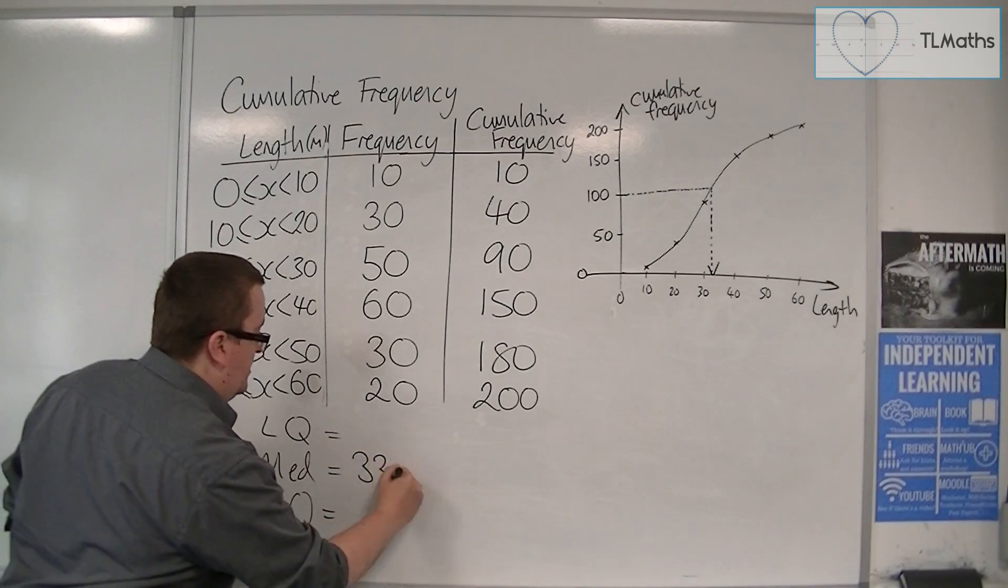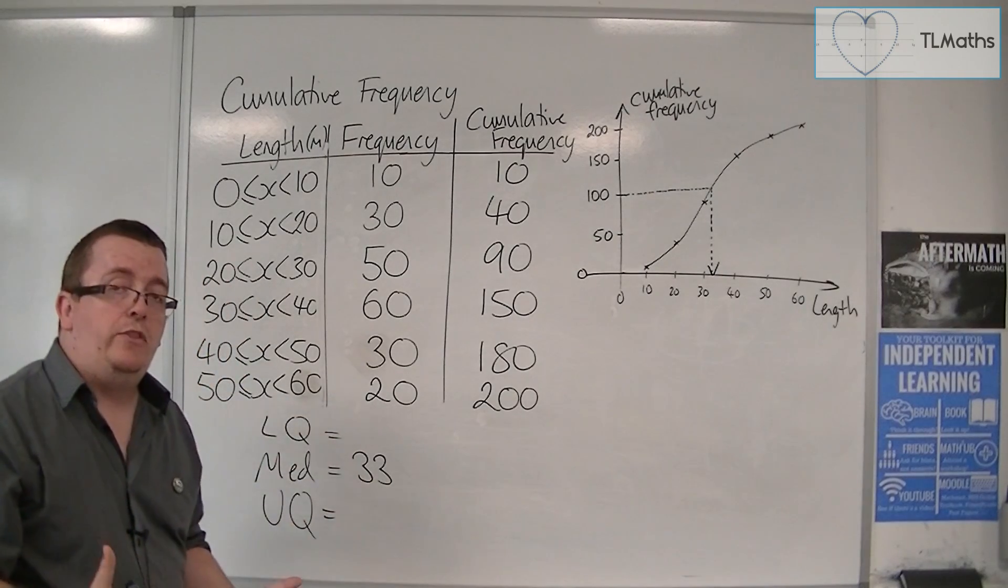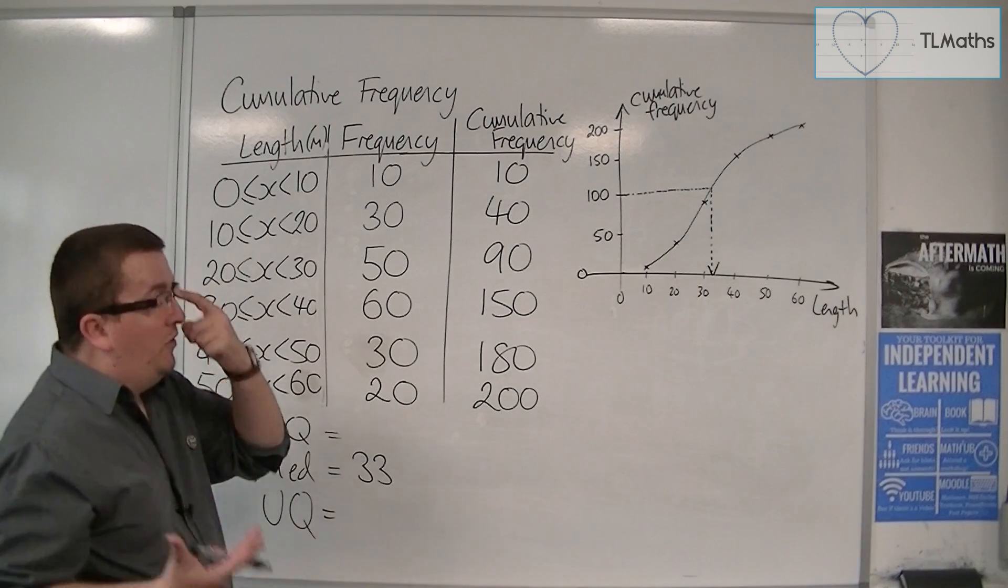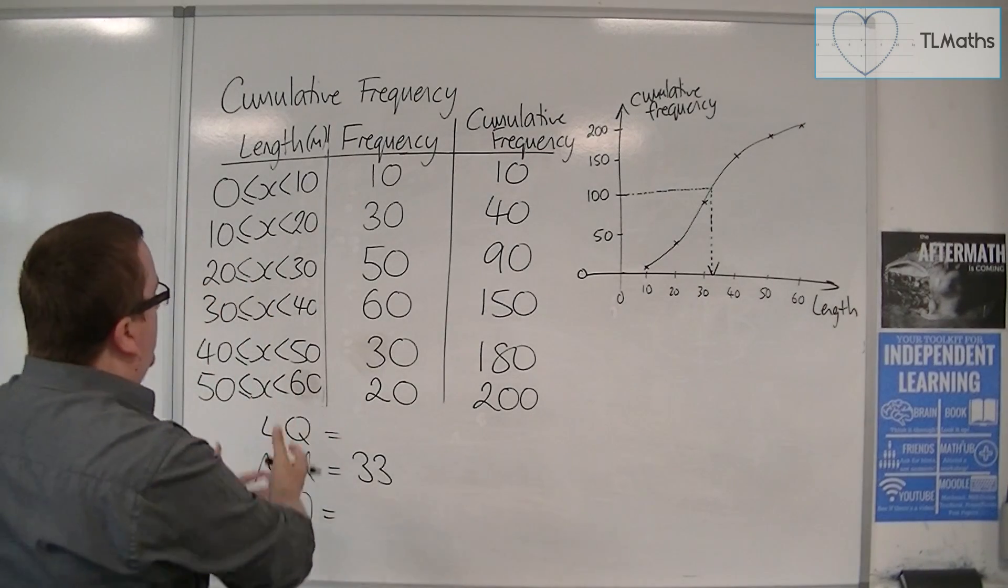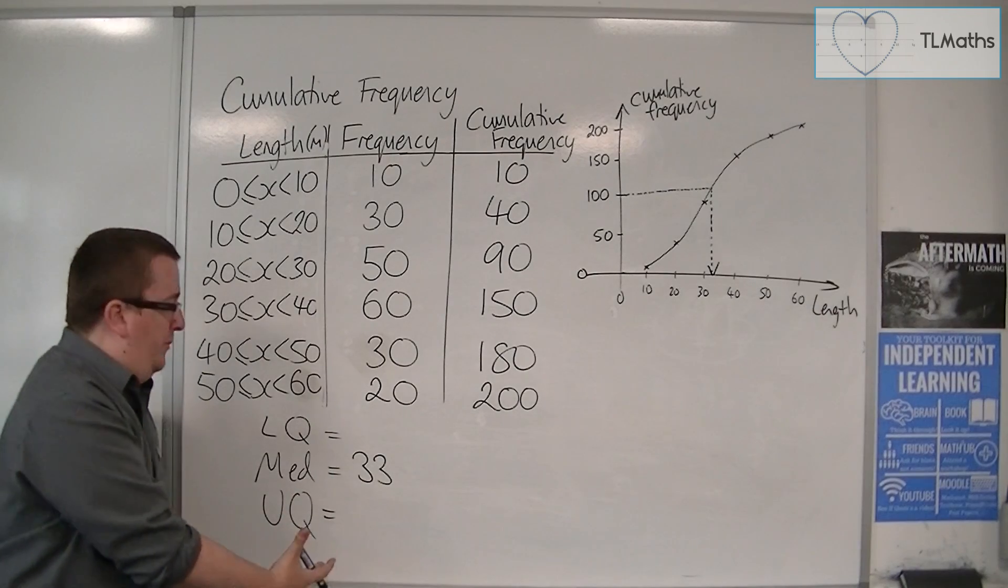And so this number is between 30 and 40. It's probably about 33. So I could say the median is approximately 33. This is an approximation. Because I lost that original data, this is just going to be approximating.